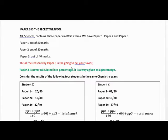This is the reason why Paper 3 is going to be your savior: Paper 3 is never calculated into percentage. It is always given as a percentage. If you get 3 in Paper 3 and you score 0 in Paper 1 and 0 in Paper 2, you're going to get 3 percent. So if you get 40 out of 40 in Paper 3, you already have 40 percent without Paper 1 or Paper 2.